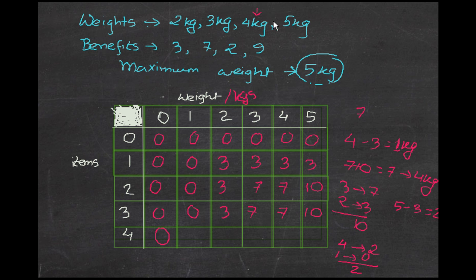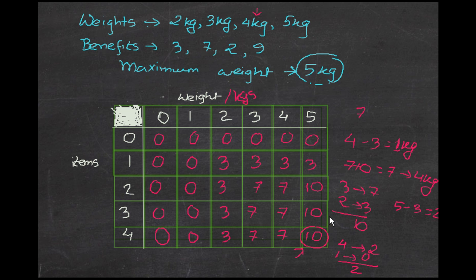For the fourth item, all values before 5 kg remain the same. When we reach 5 kg, the benefit is 9. But 9 is lower than 10, so the maximum benefit remains 10. So the answer to this 0/1 Knapsack problem is 10.